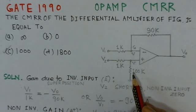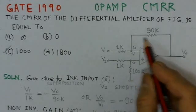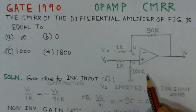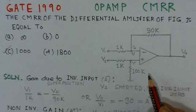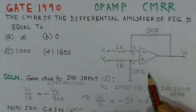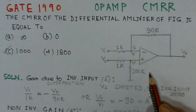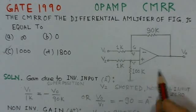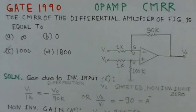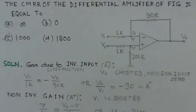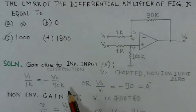The present problem is essentially about CMRR. A circuit for a differential amplifier is given, and we need to evaluate the CMRR. The gain for both inverting and non-inverting modes is to be determined. We can determine this gain by applying the superposition theorem, and we'll see how to analyze this circuit.